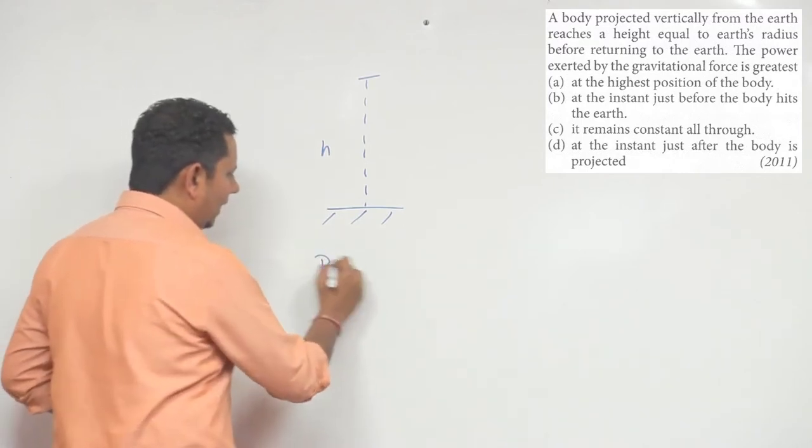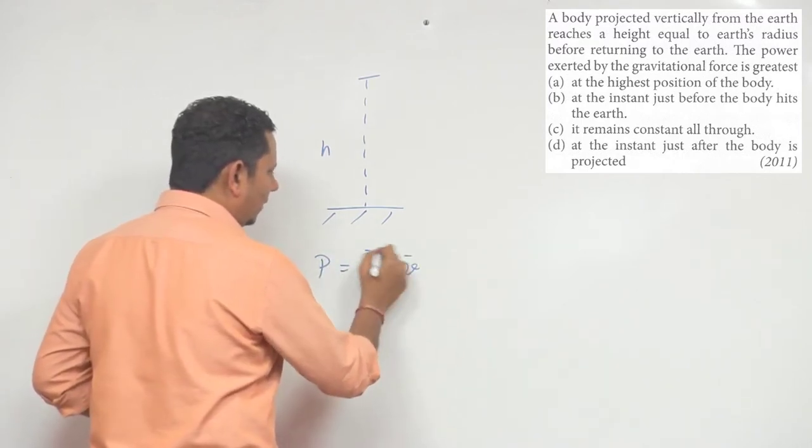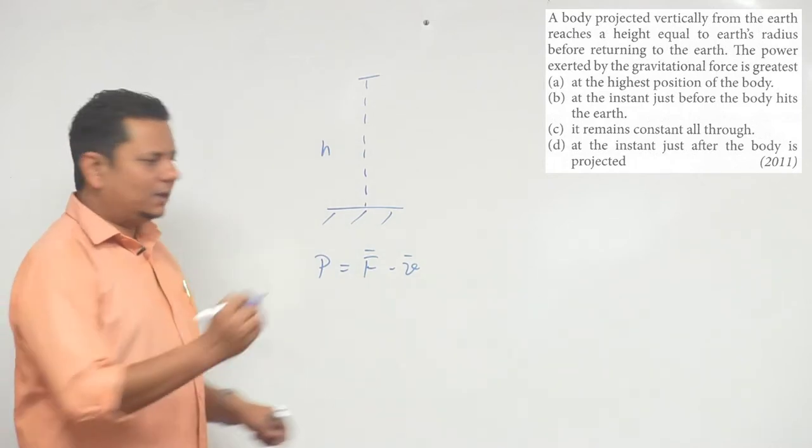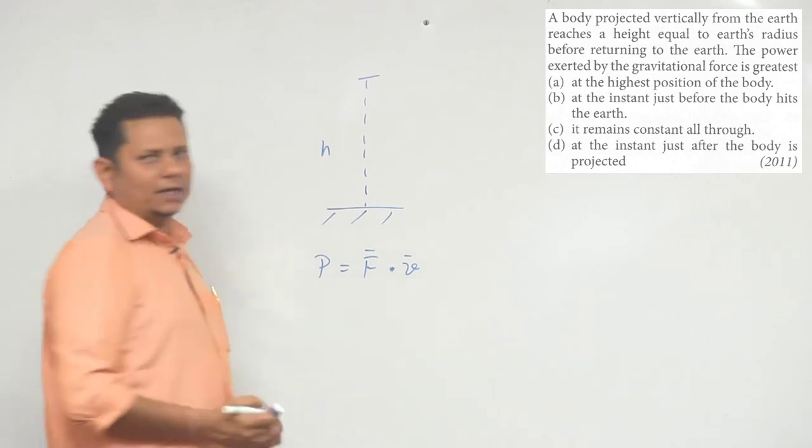Now, we know that power is equal to F dot v. Power is a scalar quantity, F and v are vector quantities, and we have the dot product.